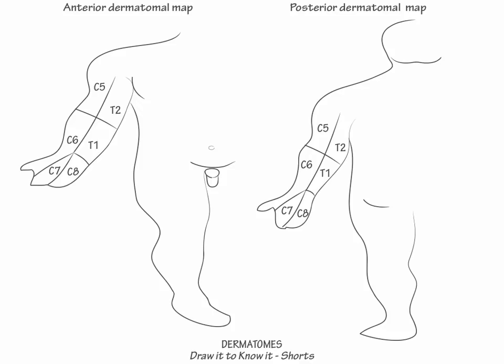To show the important dermatomes of the thorax, abdomen, and pelvis: indicate that T4 covers the nipple line, T10 covers the umbilicus, T12 covers the suprapubic area, L1 covers the inguinal region, S2 covers the proximal external genitalia, and S3 covers the distal external genitalia.